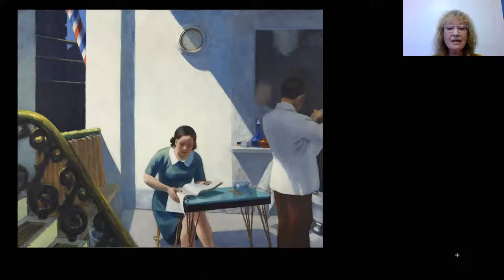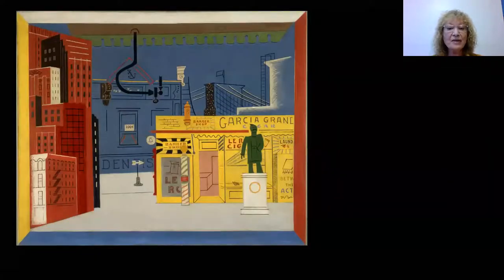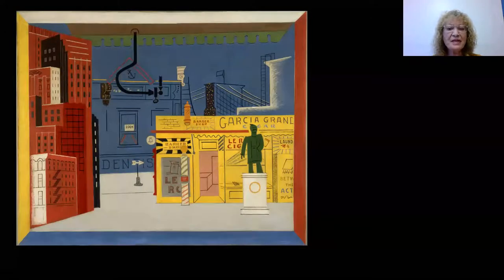Now, let's look at Davis's painting, which has a variety of images practically overlapping. What else do you see? Imagine yourself standing in the foreground. Can you walk around? It seems it would be impossible. That is because the painting is flat in comparison to Hopper's painting.